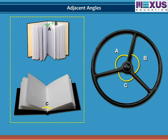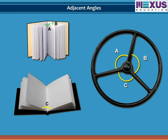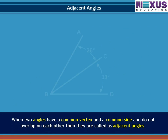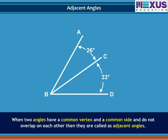Have you noticed a book open in this way, or a steering wheel? You will find that pairs of angles are formed, placed next to each other. When two angles have a common vertex and common side and do not overlap on each other, they are called adjacent angles. In this figure, angle ABC is adjacent to angle CBD because they have a common vertex B and common side BC, and arms AB and BD are on either side of the common arm and do not overlap.